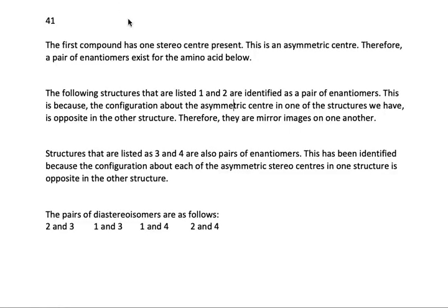The first compound has one stereocenter present. This is an asymmetric center. Therefore, a pair of enantiomers exist for the amino acid below. The following structures that are listed 1 and 2 are identified as a pair of enantiomers. This is because the configuration about the asymmetric center in one of the structures that we have is opposite in the other structure.